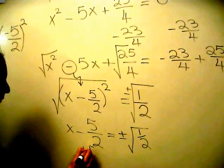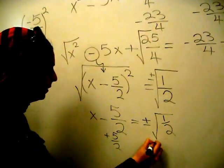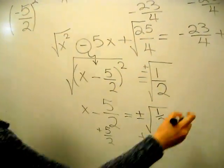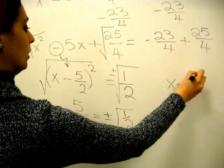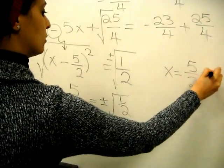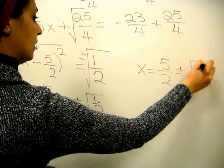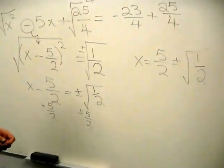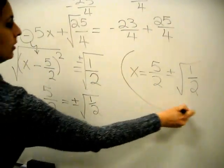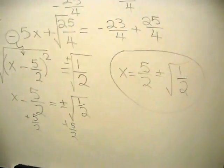By adding 5 halves to each side, x should be equal to 5 halves plus or minus root 1 over 2. That's your final answer.